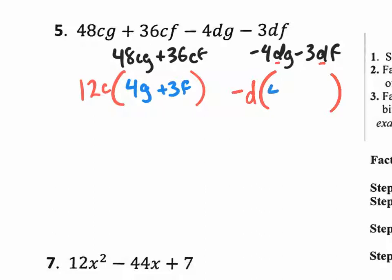And what would be left? You'd have a 4G. Think about this. Negative D times what gives you a negative 3DF? Just a positive three and an F. So you put plus 3F.